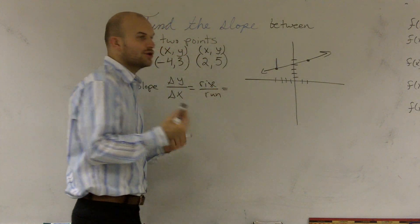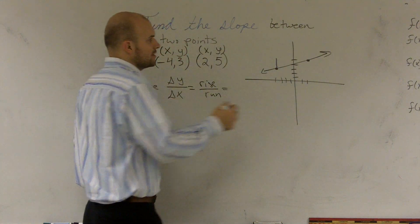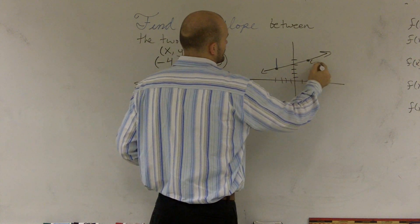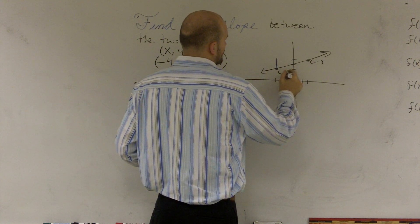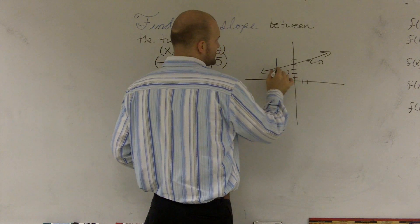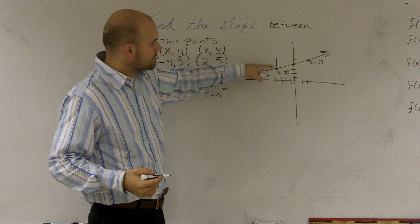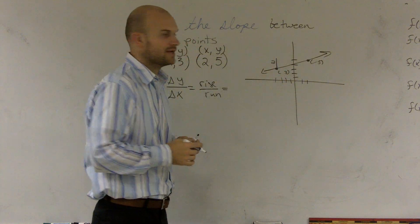Well, let's just look at what my y values are. For this I have 5, for this one I have 5, and for this one I have 3. So what is the change? How far do I have to go from 3 to 5? Well, I have to go 2 units up, right?